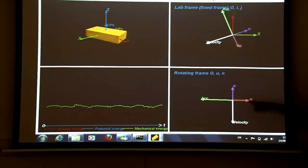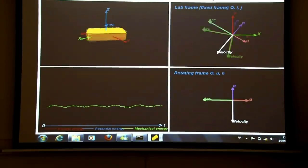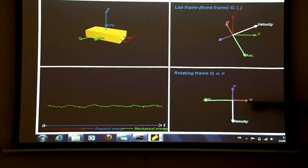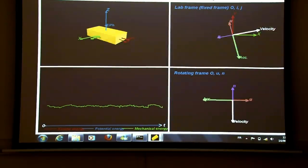We see that now the two vectors, U and N, that are the vectors associated to polar coordinates, are fixed because we're in the rotating frame.